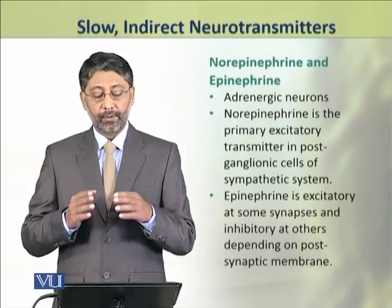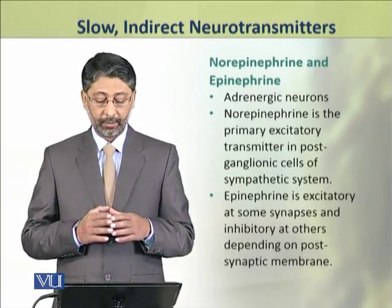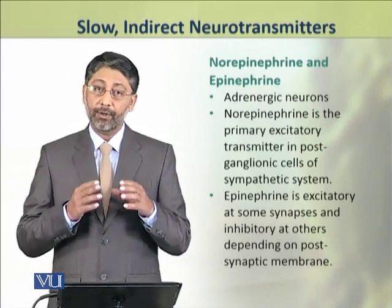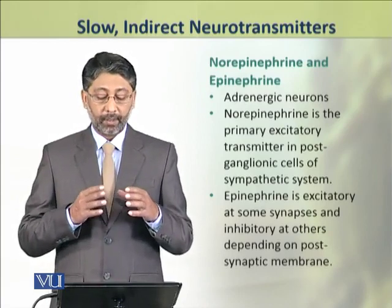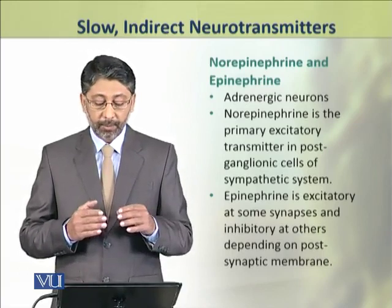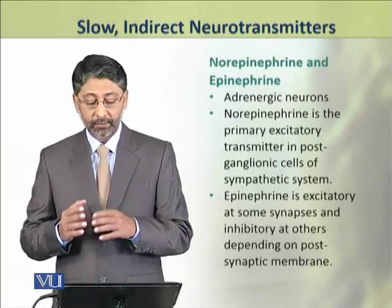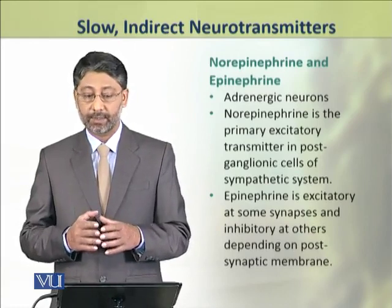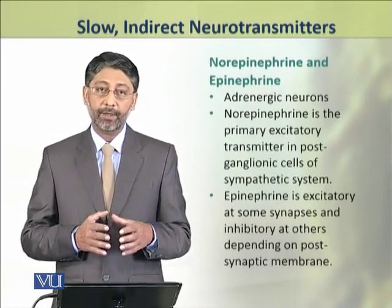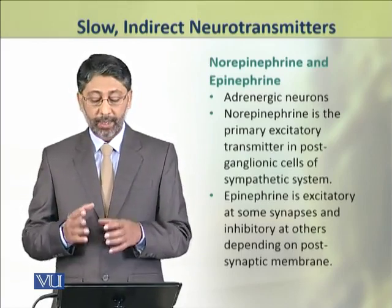We shall discuss the role of norepinephrine and epinephrine in detail. The neurons which release these neurotransmitters are called adrenergic neurons. Norepinephrine is the primary excitatory neurotransmitter in postganglionic cells of the sympathetic nervous system, while epinephrine is excitatory at some synapses and inhibitory at others, depending on the characteristics of the postsynaptic membrane.